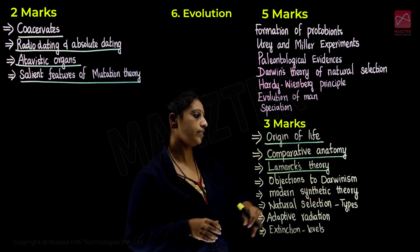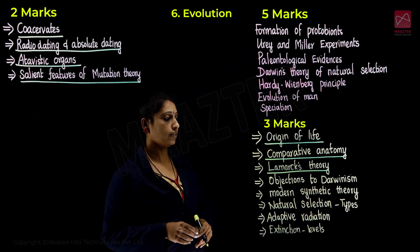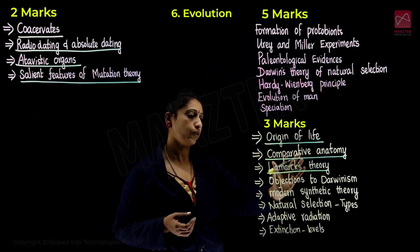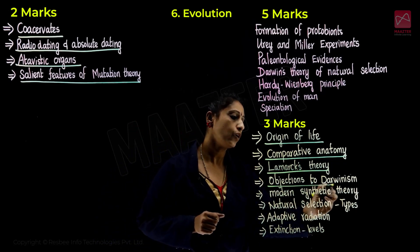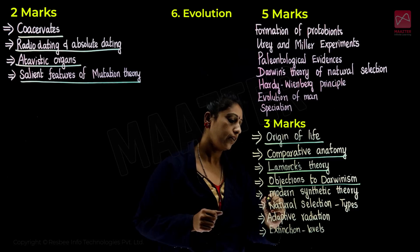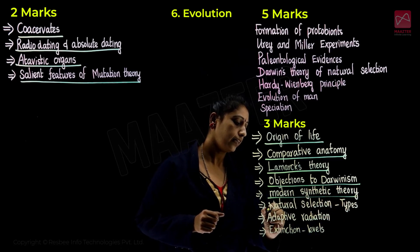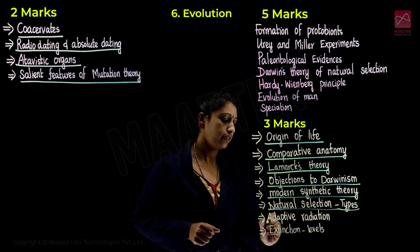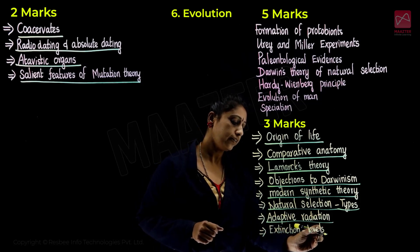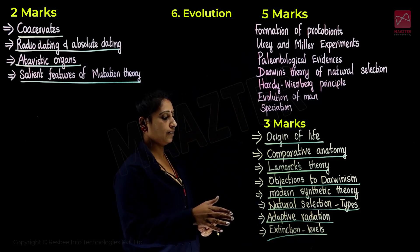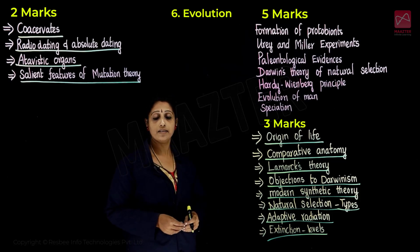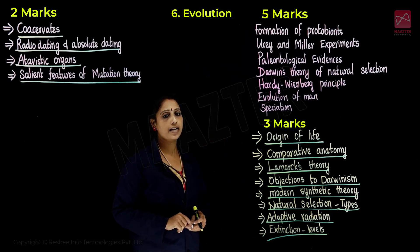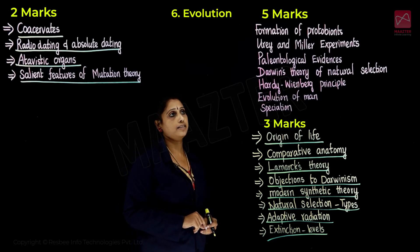Lamarck's theory — use and disuse theory and inheritance of acquired characters — is one important theory. Then Darwinism and its objections, modern synthetic theory, natural selection, adaptive radiation, and extinction. Extinction levels include species extinction, mass extinction, and global extinction — there are two more questions here.